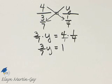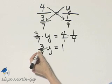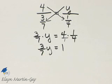Now how do I solve this equation for Y? One way to do so, since this is 3 7ths times Y, I can divide both sides by 3 7ths or, which leads to the same thing, I can multiply both sides by the reciprocal of 3 7ths, which is 7 3rds.